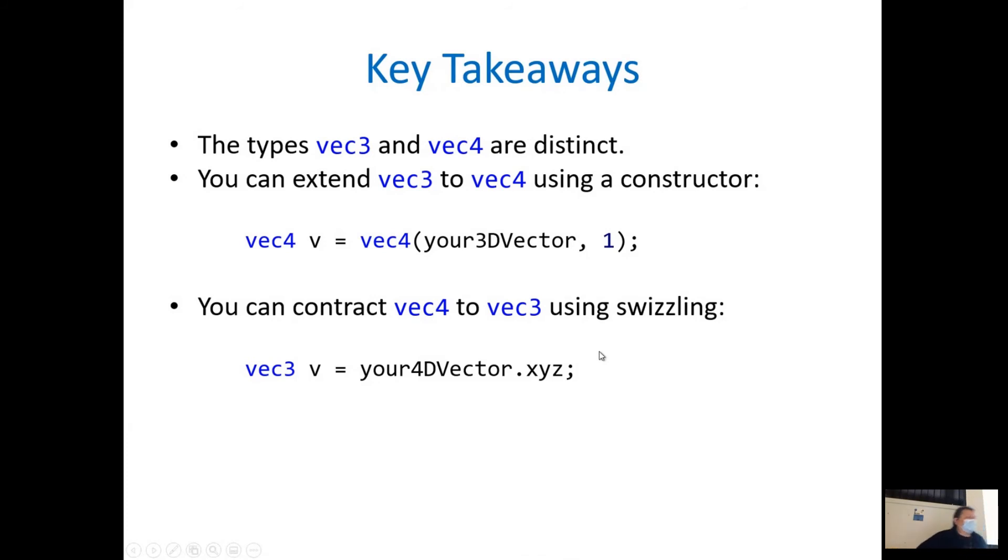Key takeaways. Types vec3 and vec4 are distinct. You can extend vec3 to vec4 using a constructor like this. Vec4 can be constructed from three components XYZ of a 3D data, extended by the fourth component. And you can contract or demote vec4 to vec3 using swizzling, just telling I want XYZ. Swizzling is very flexible. It's most usually used in the form XYZ, but XY is also okay, and even XZ or ZYX. These are all legal forms of swizzling. So it's very flexible when you need to copy components of one object to another object.